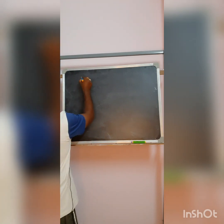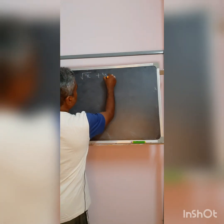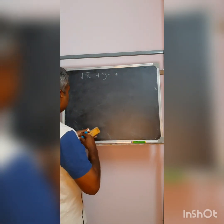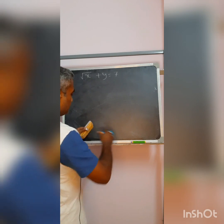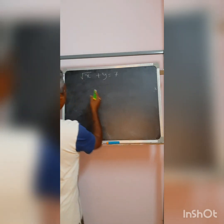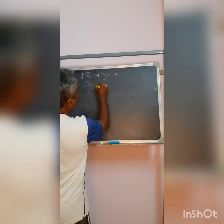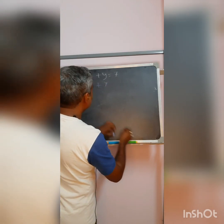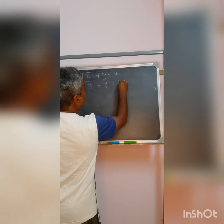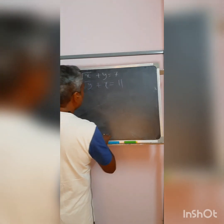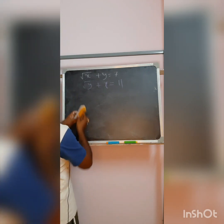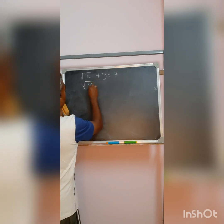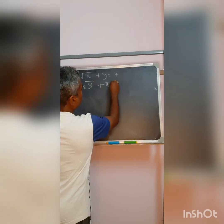Going to the next sum. This says: if root x plus y equals 7, and root y plus x equals 11. So the second equation says root y plus x is equal to 11.